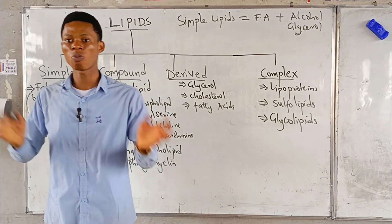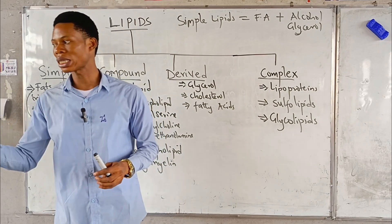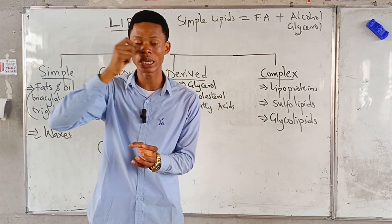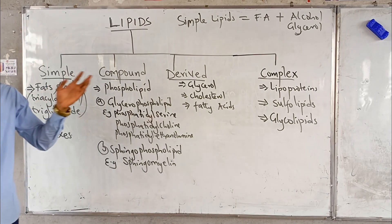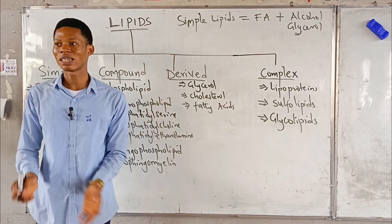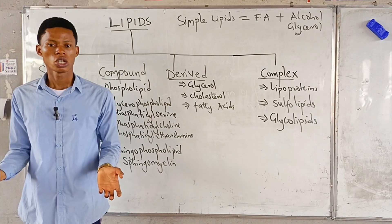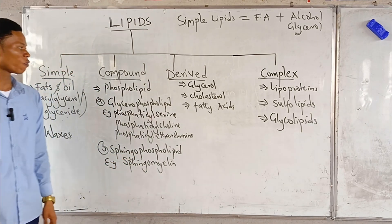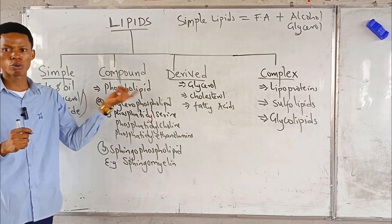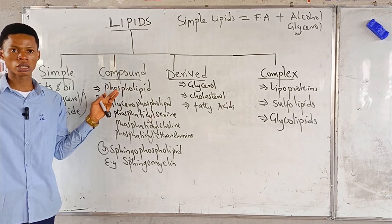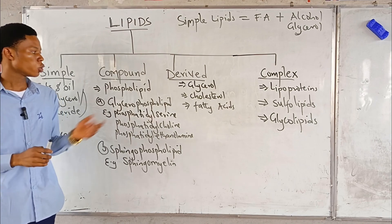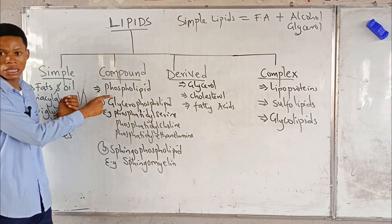That is the difference between a simple lipid and a compound lipid. Simple lipid contains only fatty acid and alcohol. Compound lipid contains fatty acid, alcohol, and an additional compound. The additional compound we are adding can be a phosphate group, can be nitrogenous bases, can be sulfur, can be anything. So if the additional group is a phosphate group, you call it a phospholipid.